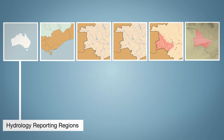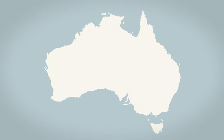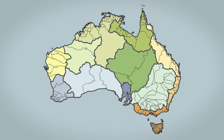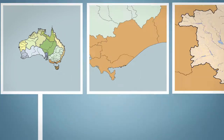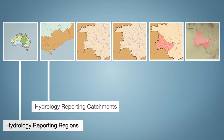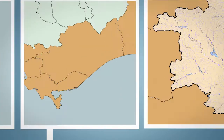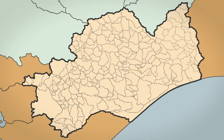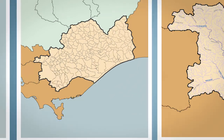First up, hydrology reporting regions define Australia's drainage divisions and river regions. This is used for reporting by government and other organisations. Hydrology reporting catchments are the building blocks of reporting regions. They provide finer detail for smaller rivers.